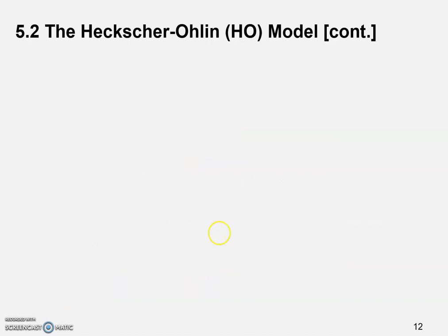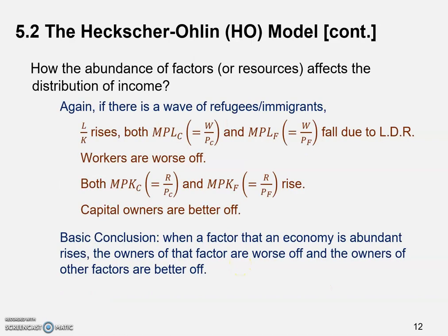We also discussed the distributional effect and said that when a factor that an economy is abundant in rises, its owners are worse off and owners of other factors are better off. One thing I'd like to point out is that no matter when we look at the general conclusion about production or the conclusion about income distribution, we haven't yet discussed trade.